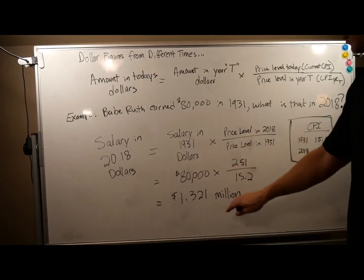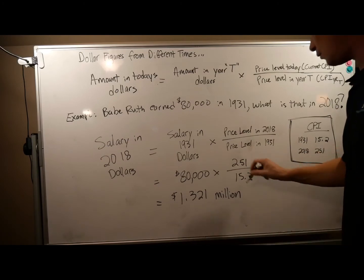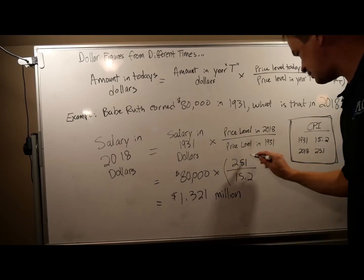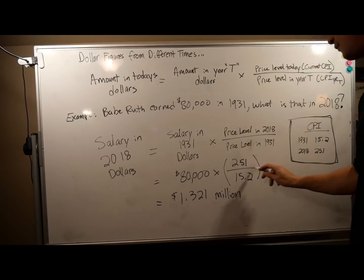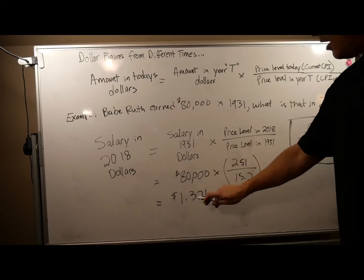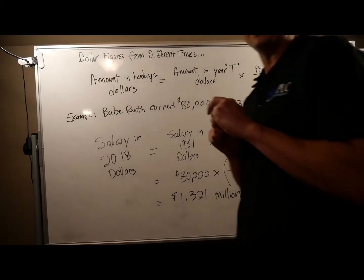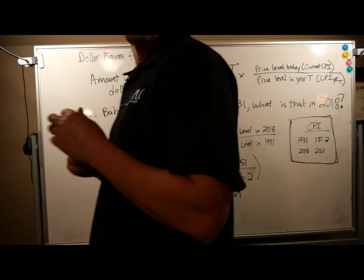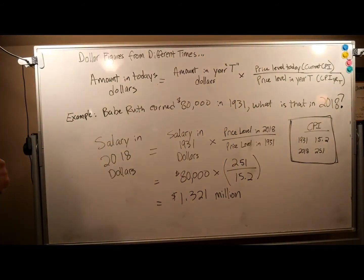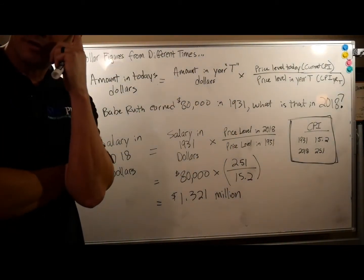So: $80,000 times 251 divided by 15.2. Following the order of operations, we do the division first and then multiply, and we come up with — in terms of 2018 dollars — Babe Ruth was paid the equivalent of $1.321 million.